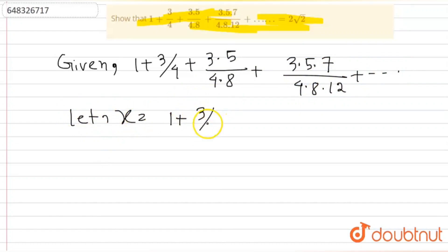So x is equal to 1 plus 3 by 4 plus 3 into 5 by 4 into 8 plus 3 into 5 into 7 by 4 into 8 into 12 plus dot dot dot. Now, therefore, x is